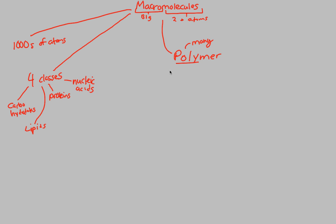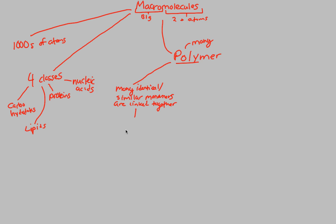A polymer is specifically defined as something in which many identical or similar monomers are linked together. Mono means one — singular. So many single pieces linked together, all combined via covalent bonds, which are very strong bonds.